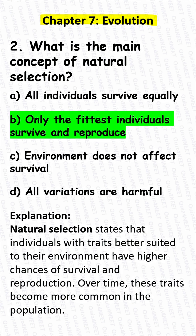Correct answer: Only the fittest individuals survive and reproduce. Explanation: Natural selection states that individuals with traits better suited to their environment have higher chances of survival and reproduction. Over time, these traits become more common in the population.